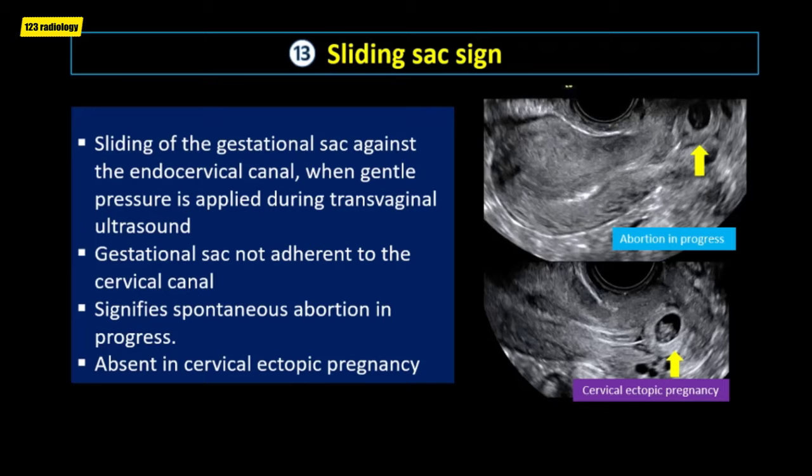The keyhole sign represents a distended urinary bladder funneling into a dilated posterior urethra proximal to the level of obstruction, giving a keyhole appearance. This sonographic sign is seen in boys with posterior urethral valve. However, the keyhole sign is not specific for posterior urethral valve and may also be present in different causes of lower urinary tract obstruction, such as urethral atresia.